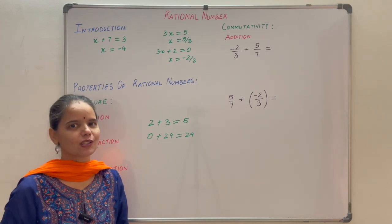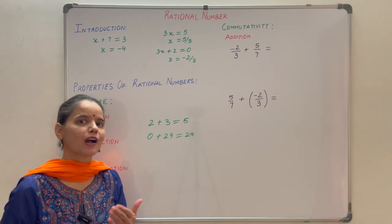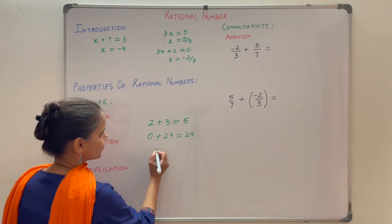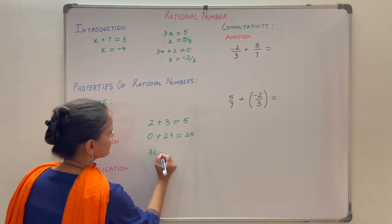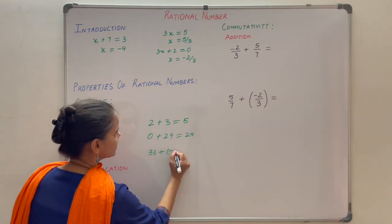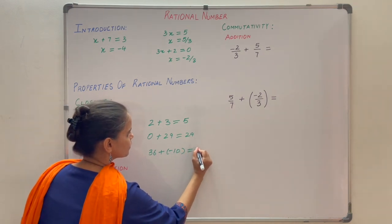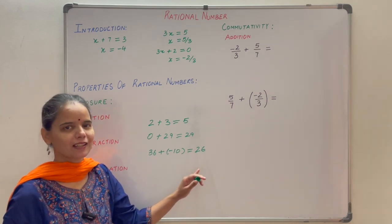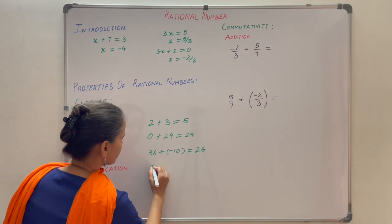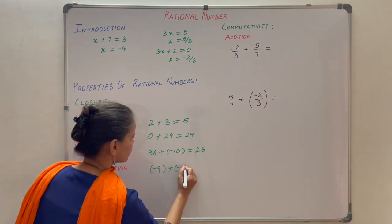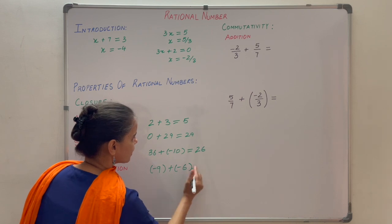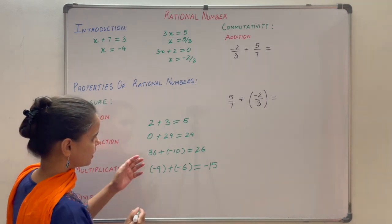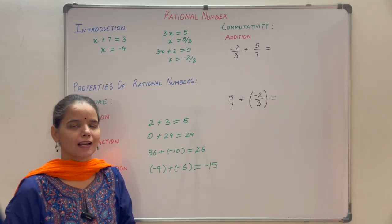Similarly, integers are also closed under addition — whenever you add any two integers you always get an integer. For example, 36 plus minus 10 gives 26. One more example: minus 9 plus minus 6 gives minus 15. So you can see that integers are closed under addition.